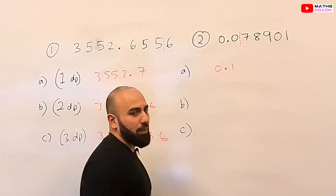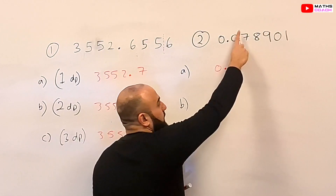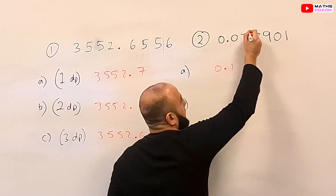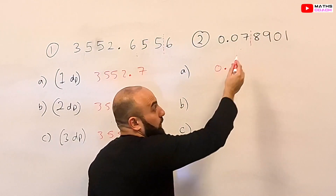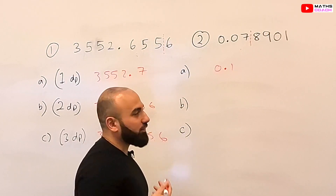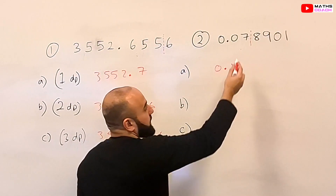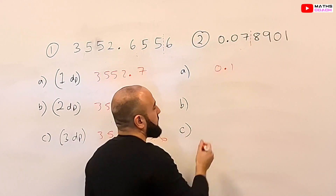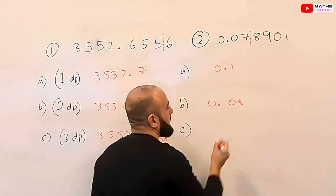Now the same number to two decimal places. Instead of drawing a line after the first digit, we draw a line after the second digit and look at the number next to it. Because it is 5 and above, we will round the 7 up, so it will be 0.08.